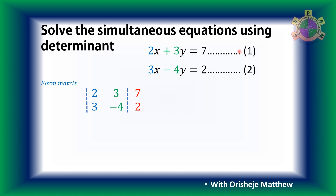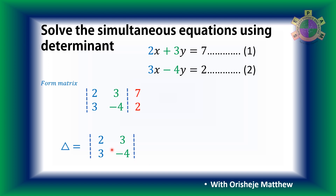The first thing we're going to do is form a minor element — a 2 by 2 determinant matrix from the coefficients of x and y. Then we find the determinant. To find the determinant of the coefficients of x and y, we multiply in this direction.